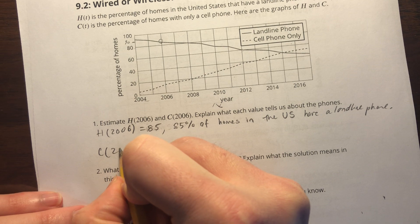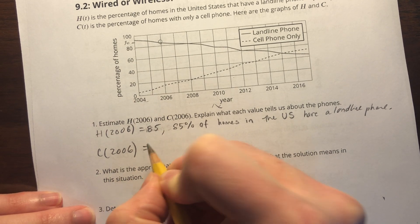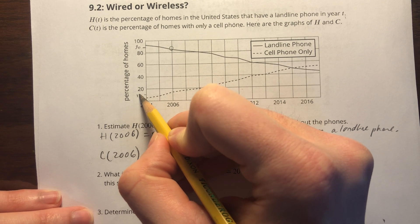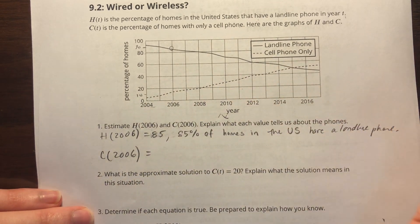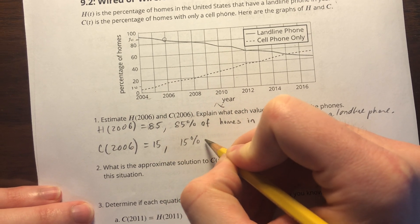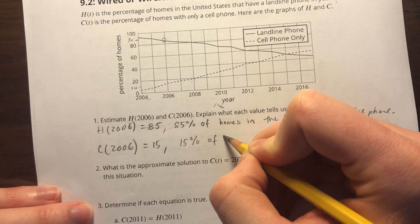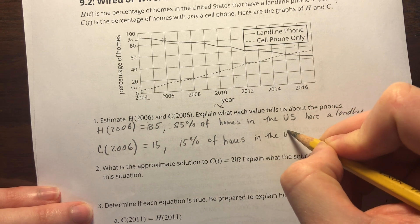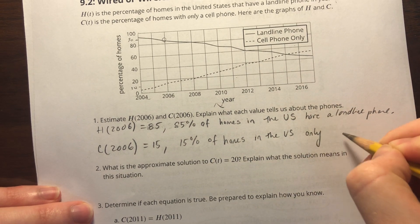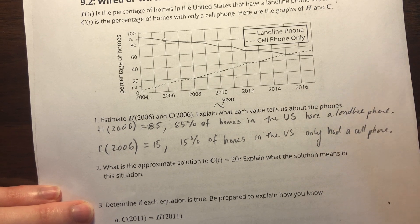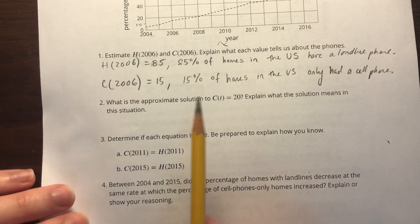C(2006) looks like it is between 10 and 20, so I'm going to guess that's about 15. That means 15% of homes in the U.S. only had a cell phone.